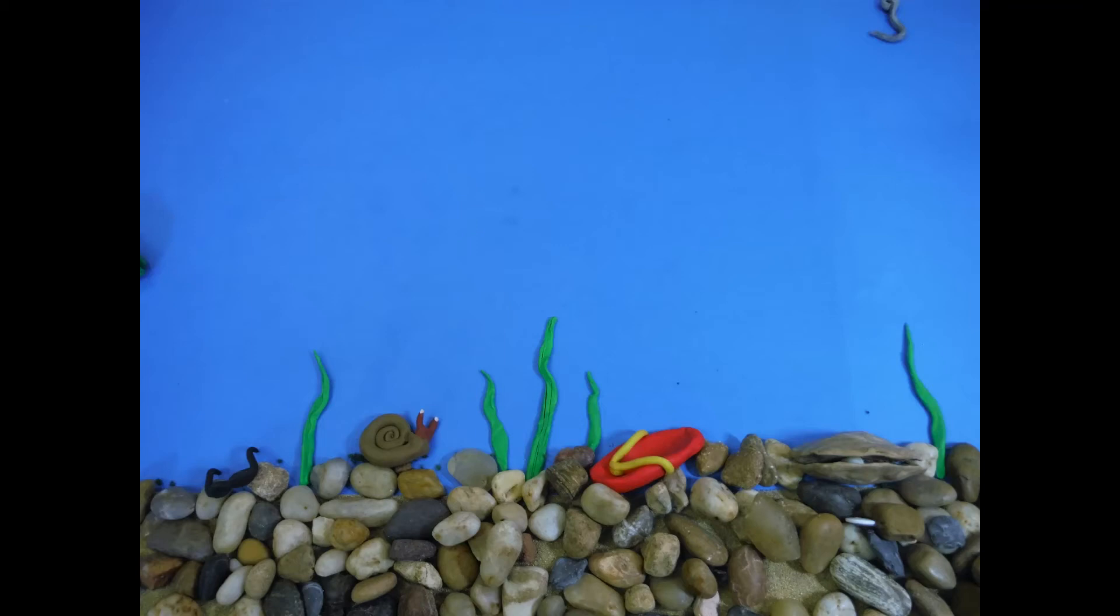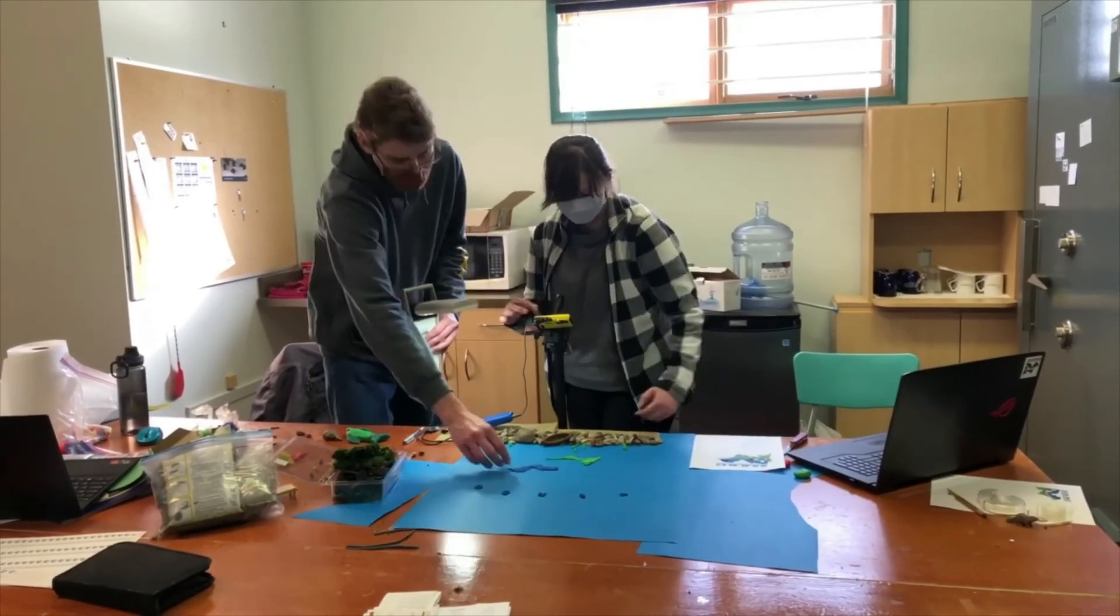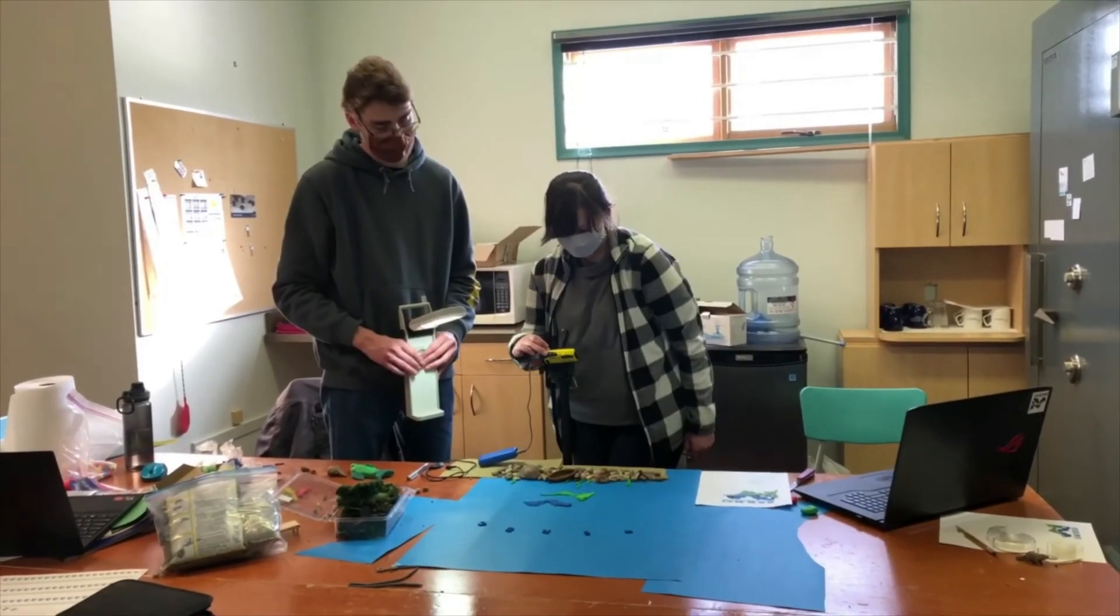To start taking pictures, place your objects in your scene where you would like them to start. Then take a couple of initial photos before you start moving them. Then you can start to move each object in between each photo.